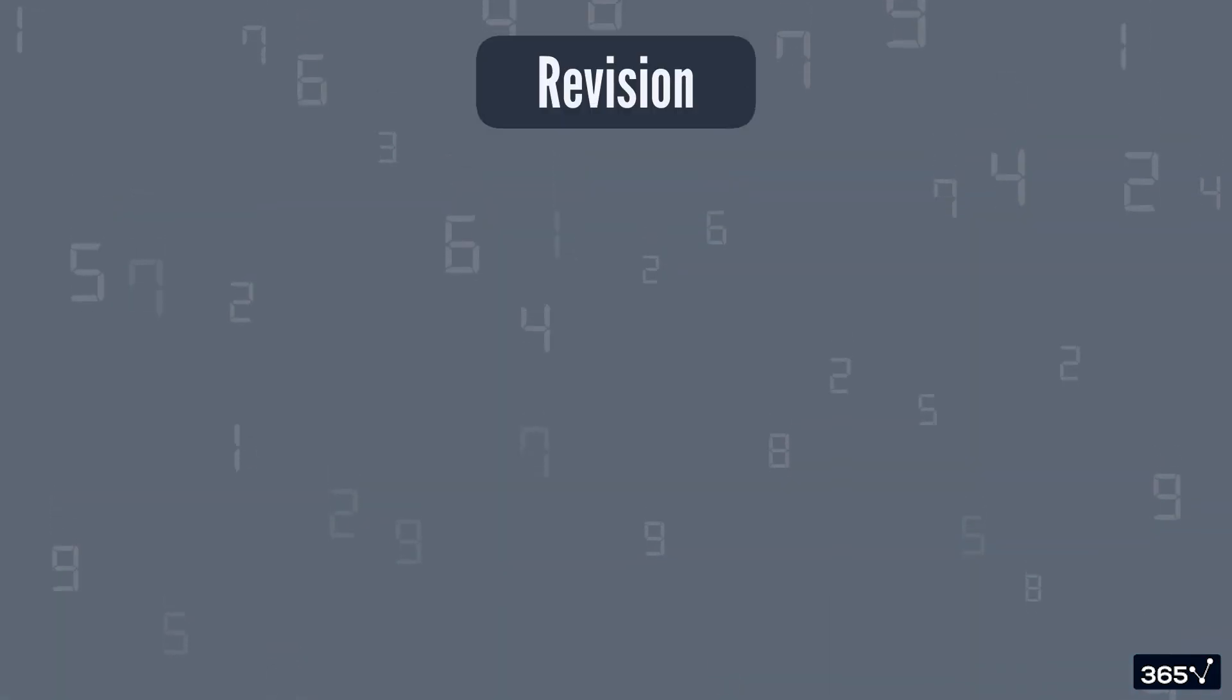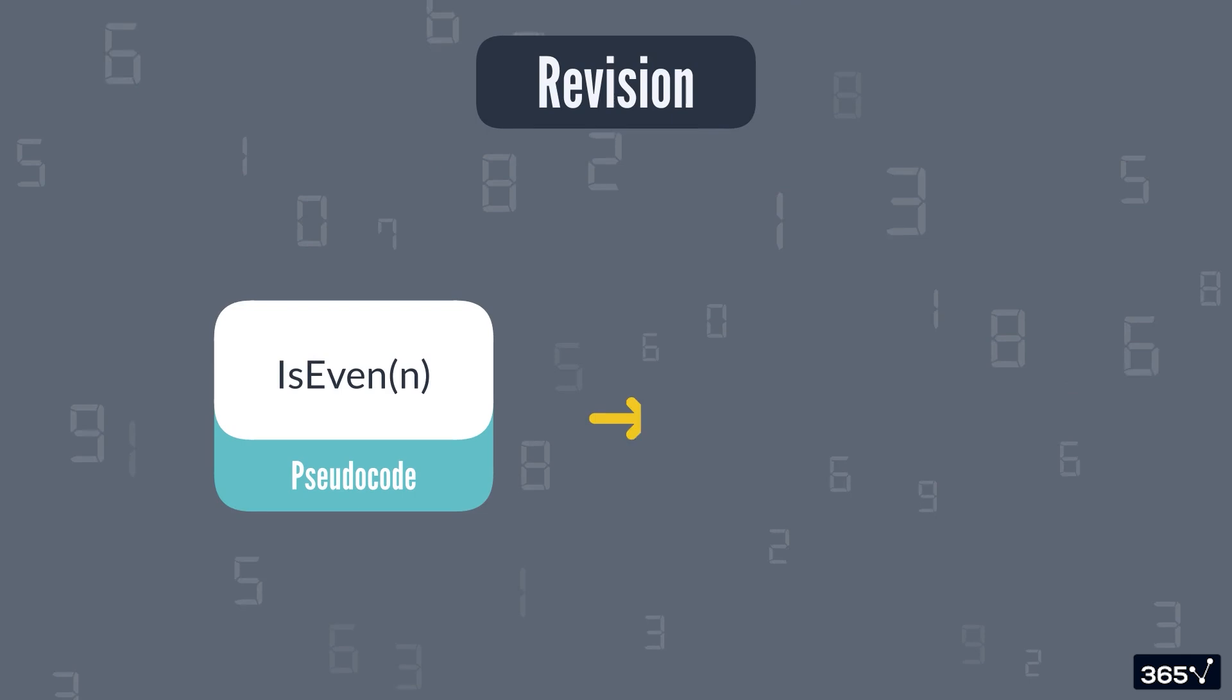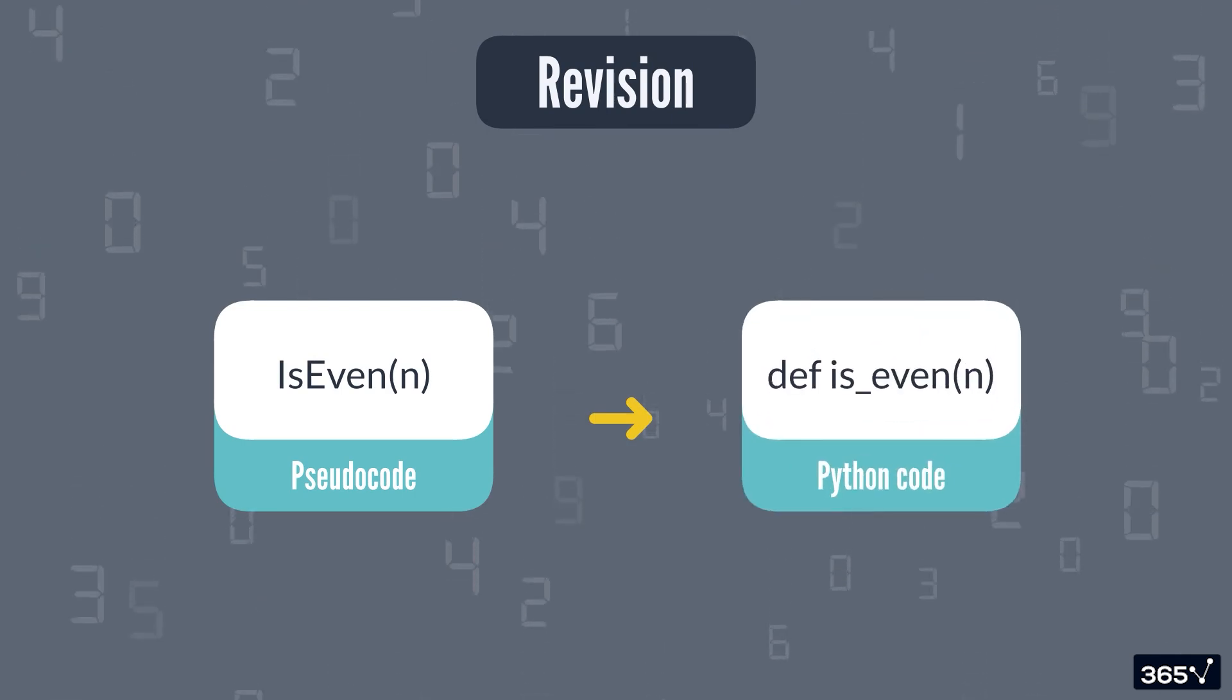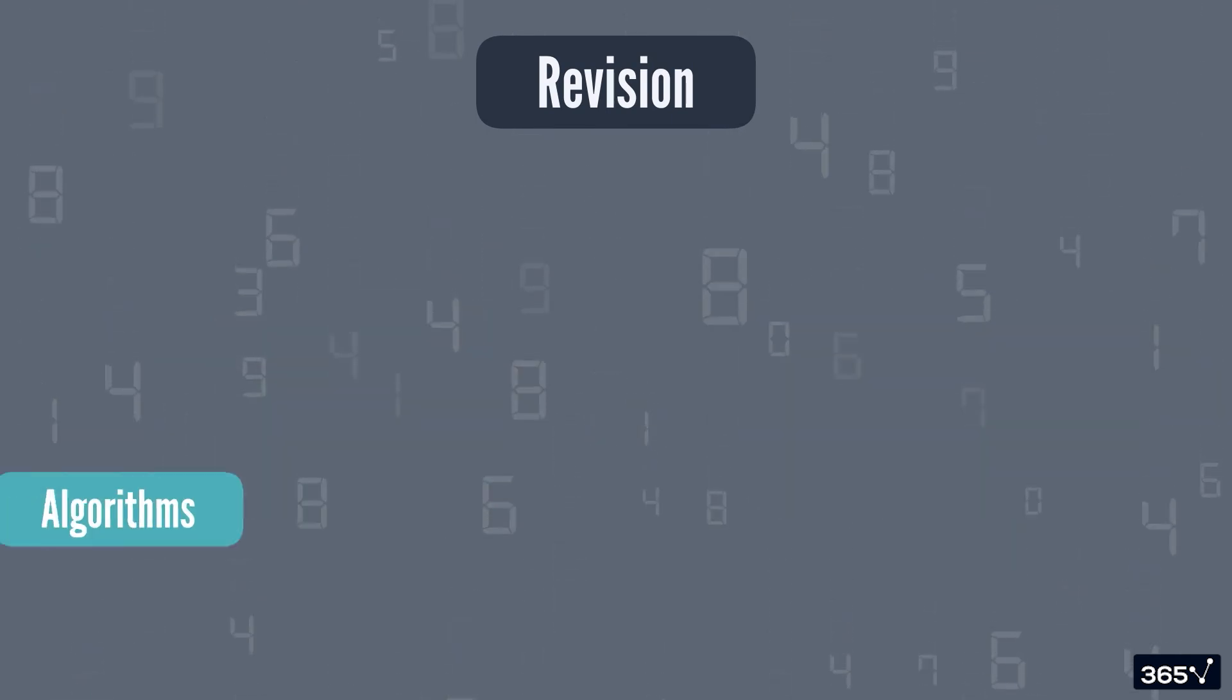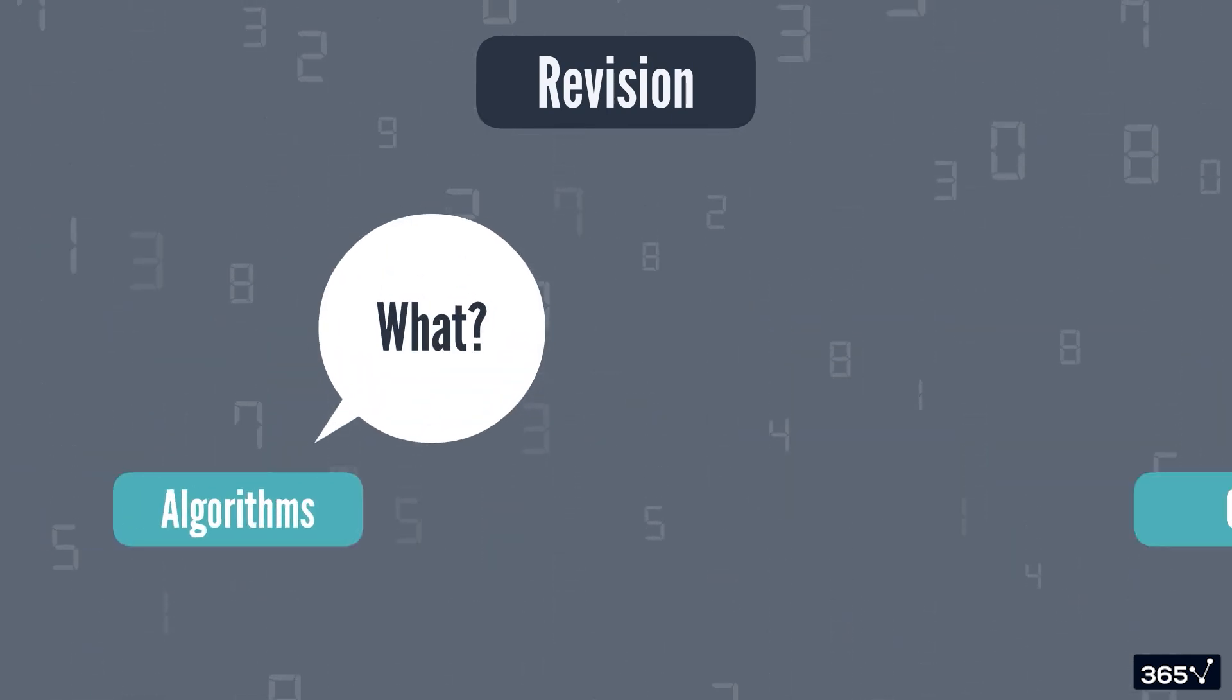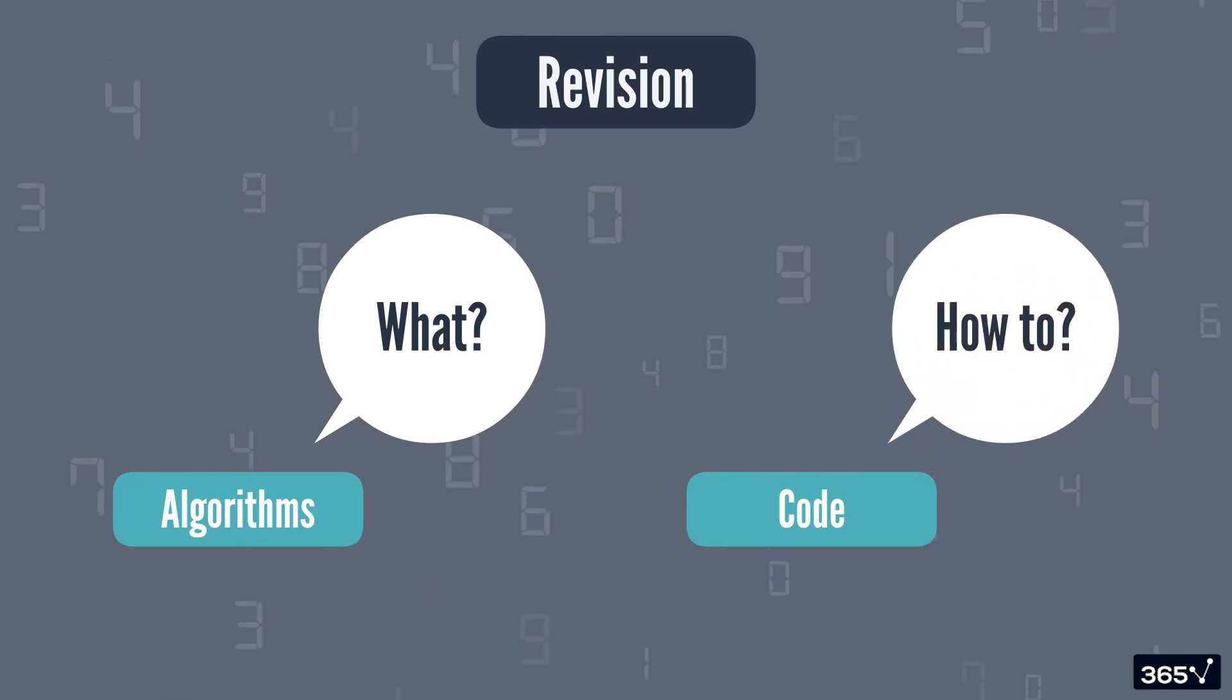Now that we know what an algorithm is, the next step is to understand how it differs from actual code. Algorithms describe what needs to be done, but code tells the computer how to do it in a specific programming language.